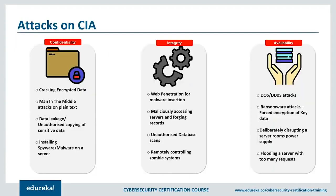First on the list is confidentiality — roughly equivalent to privacy. Measures undertaken to ensure confidentiality are designed to prevent sensitive information from reaching the wrong people while ensuring the right people can access it. Access must be restricted to those authorized to view the data. Data is commonly categorized according to the damage that could result should it fall into unintended hands. Safeguarding confidentiality may involve special training that includes security risks, strong password best practices, and information about social engineering methods.